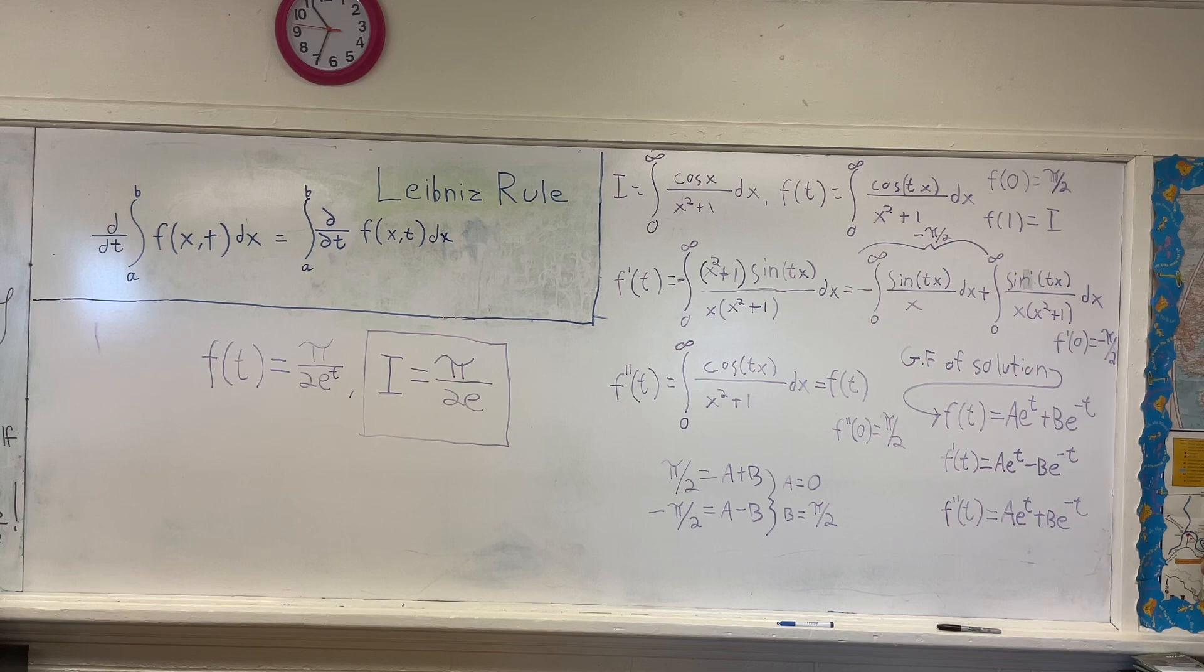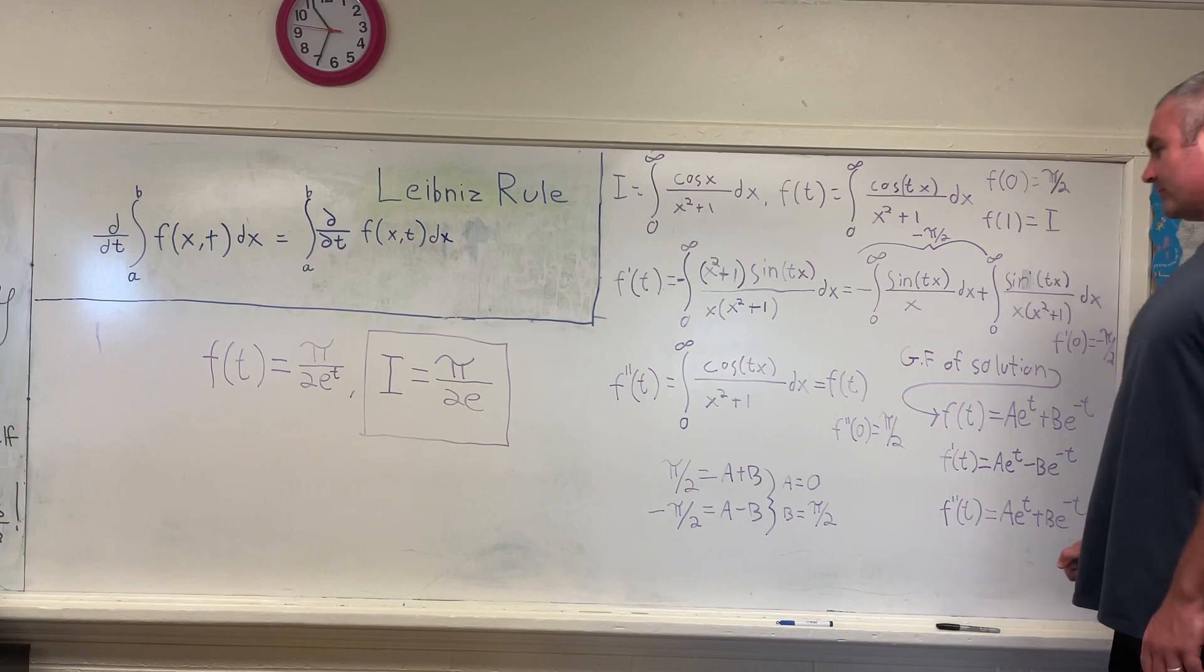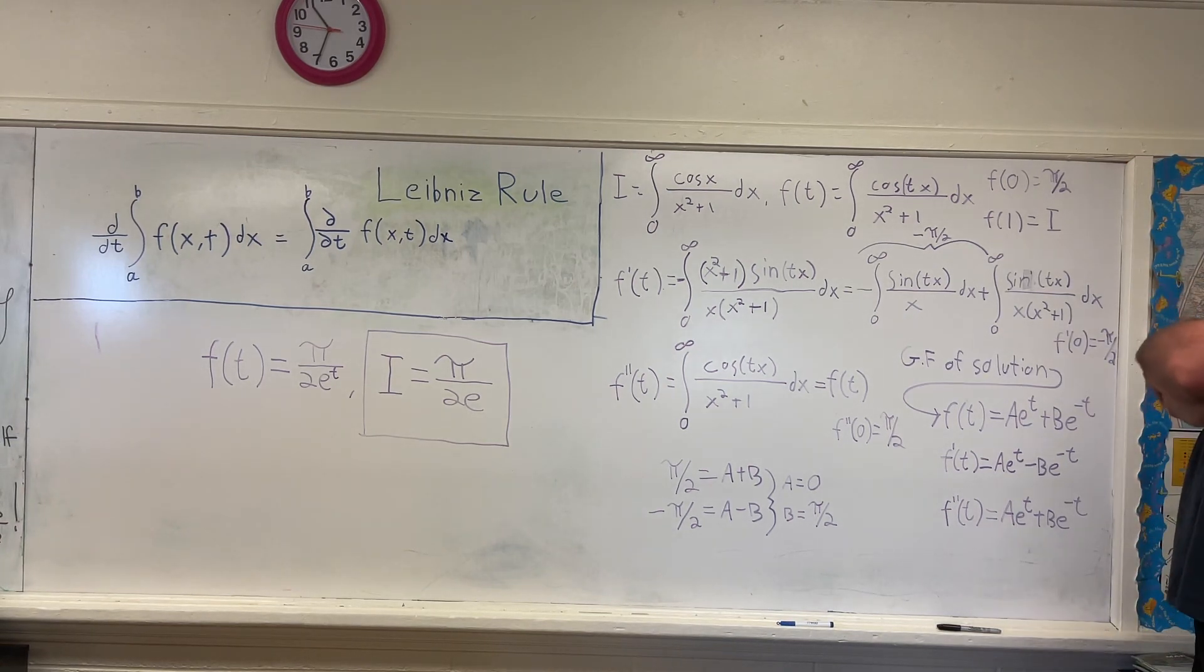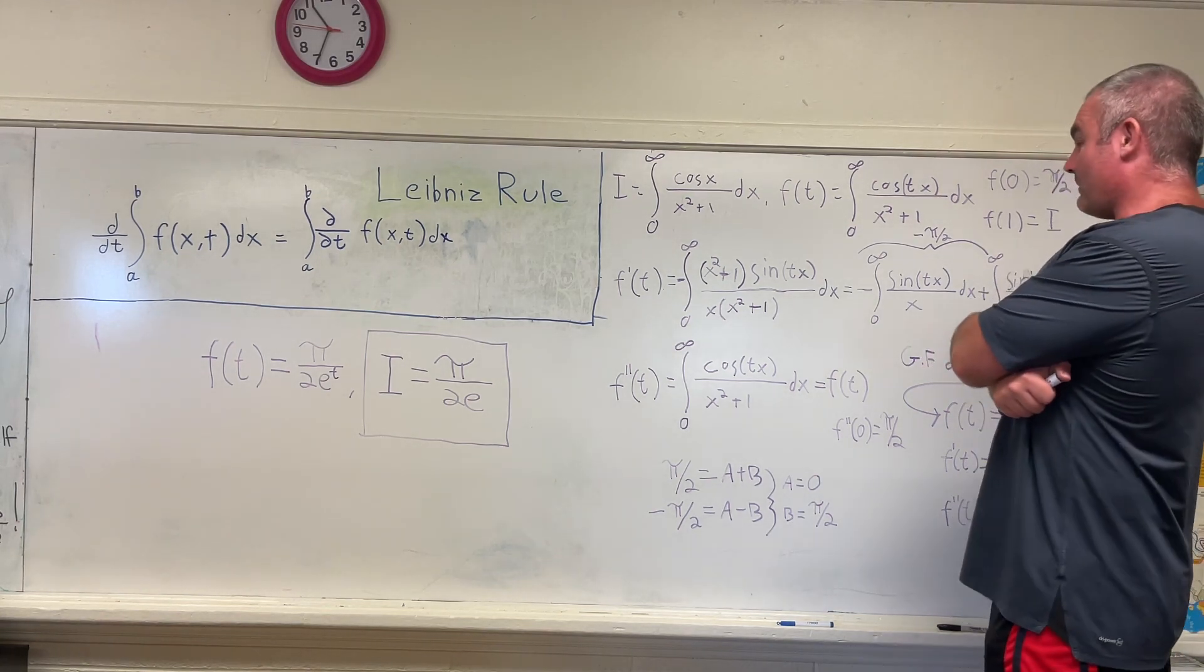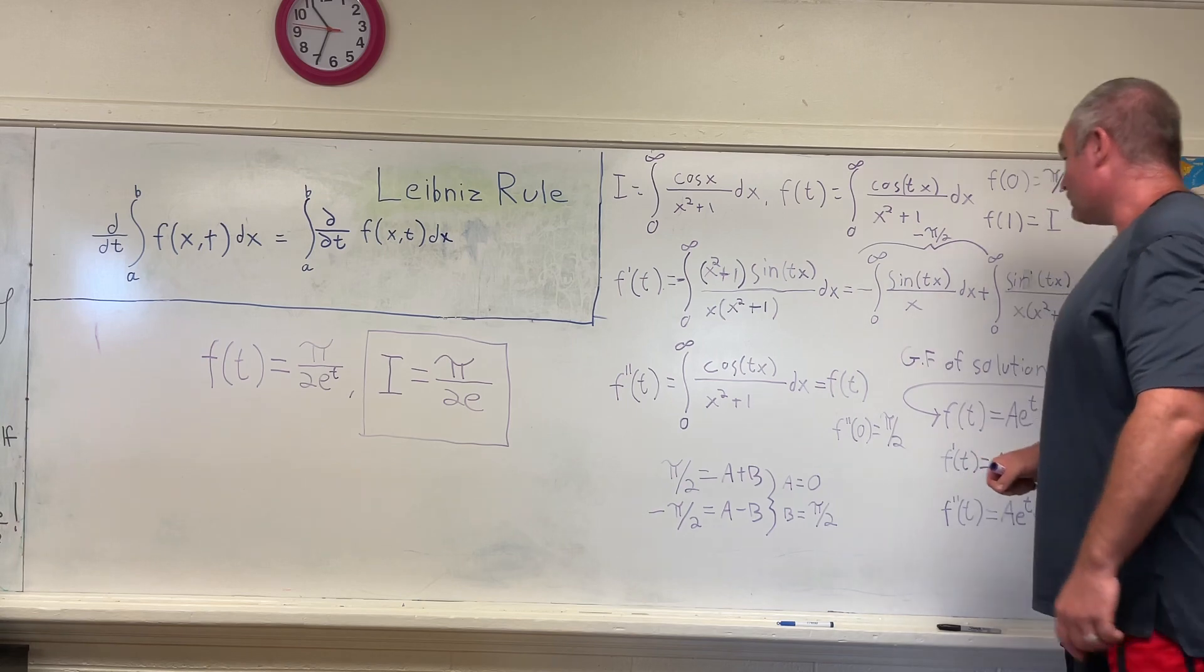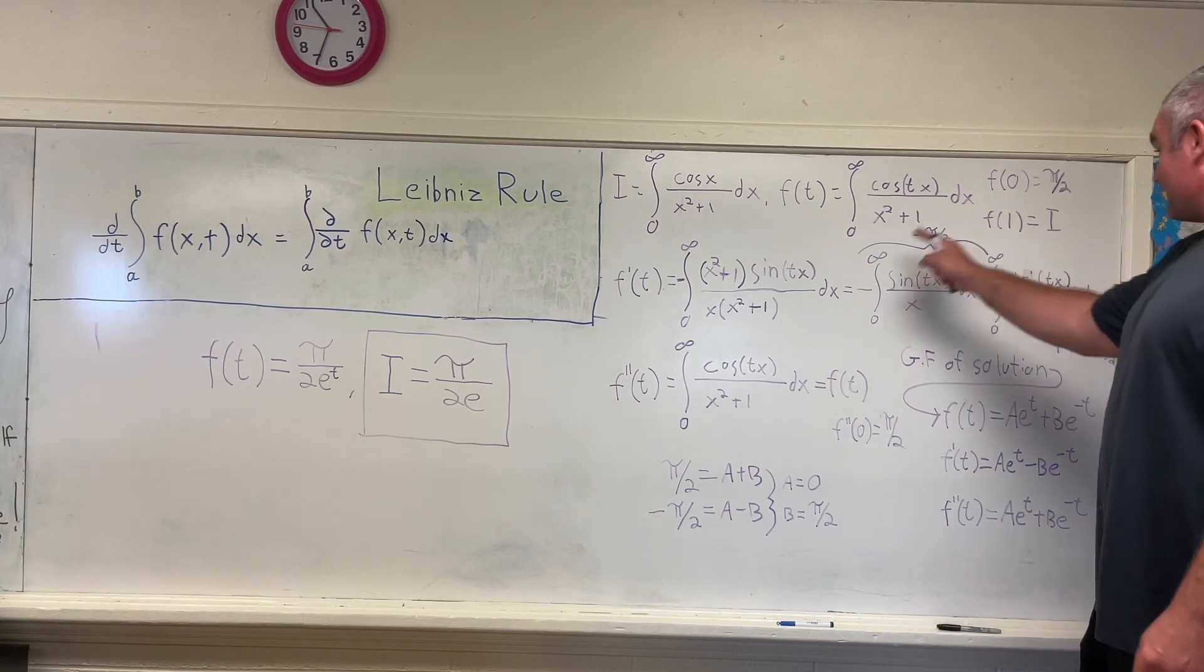And we're going to use a result that we've found many times before. And that is that this integral right here will evaluate to negative pi over 2. So now we're going to do something a little bit different that we haven't done yet. We're going to be differentiating under the integral sign again. So we're going to find f double prime of t by applying the Leibniz rule to this thing right here.